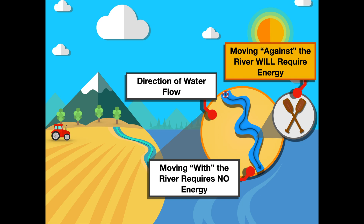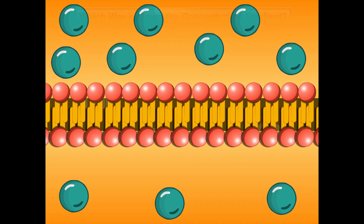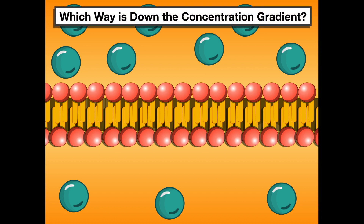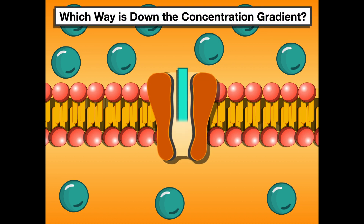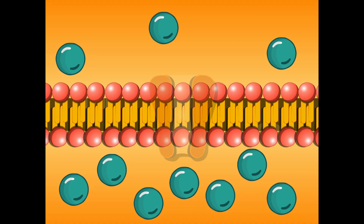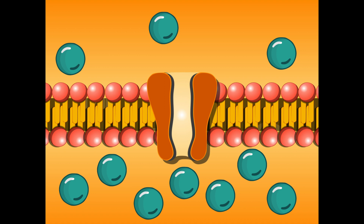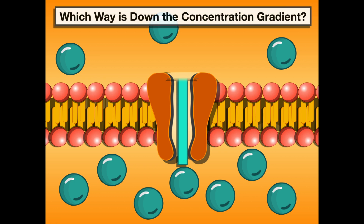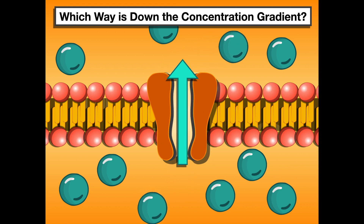Which way is down the concentration gradient? If I put a transport protein here, the concentration gradient goes this way because the molecules naturally want to diffuse in this direction to achieve equilibrium. In this scenario, we're moving down the concentration gradient this way. In the other scenario, more particles are at the bottom and fewer at the top — they want to diffuse upward, so that direction is down the concentration gradient, and we can see the particles naturally moving that way.